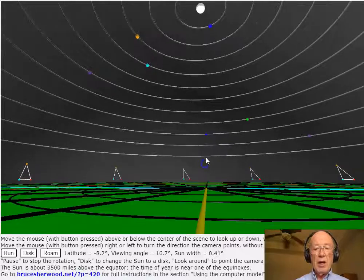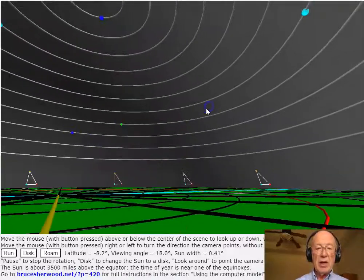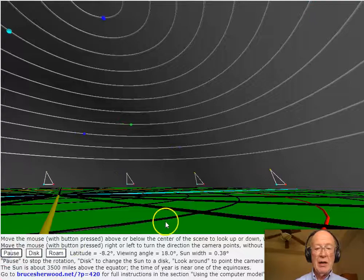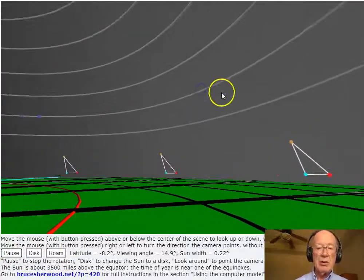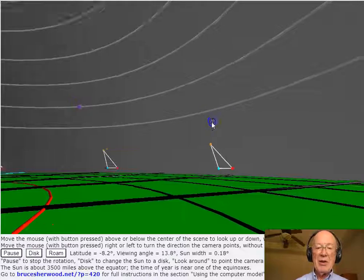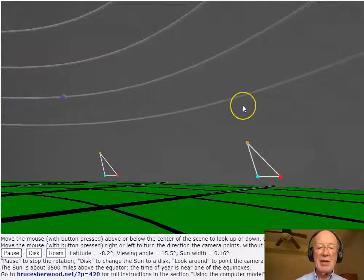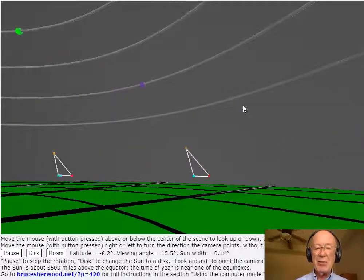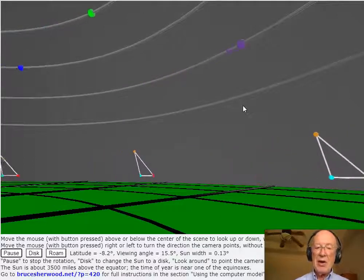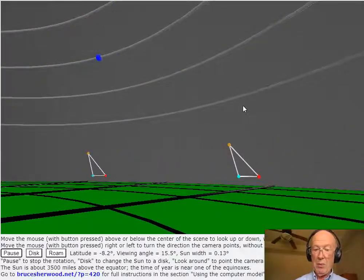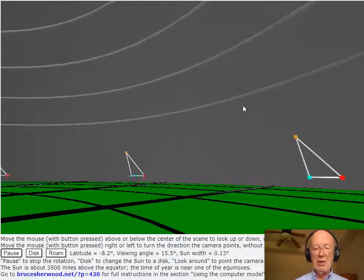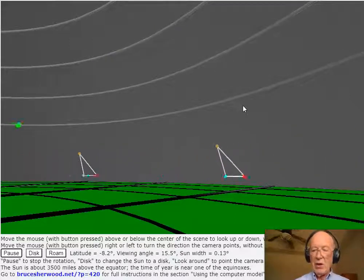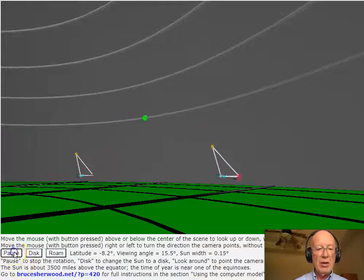Also, if you look at these constellations coming around here, they of course get bigger as they get closer to you. Again, no one has ever seen in the night sky constellations get bigger as they get closer to you. Nor has anyone ever seen except on the North Pole, a constellation running along parallel to the horizon. So these are really quite big issues.